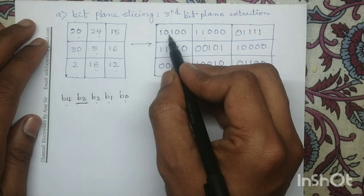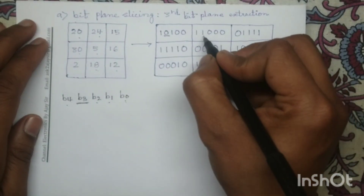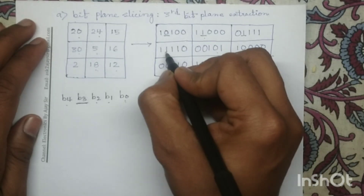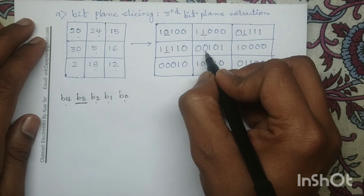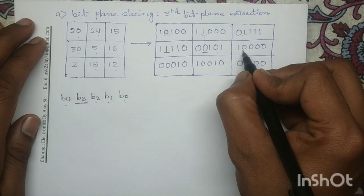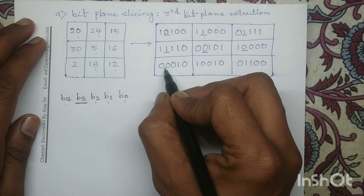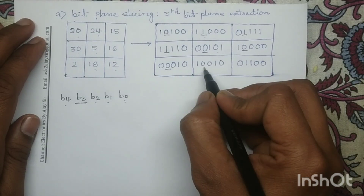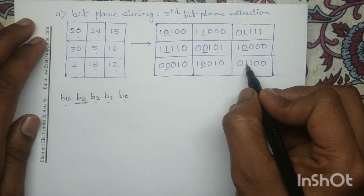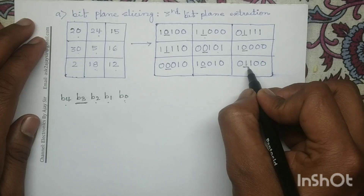So in 10100, if you target the fourth bit, that is my third bit plane value. Similarly in the next representation that is my third bit plane. For 01111 this is my third bit plane. For 11110 this is my third bit plane. For 00101 this 0 is my third bit plane. In 10000 this 0 is my third bit plane. Similarly in 00010 this is my third bit plane, and in 01100 this is my third bit plane.